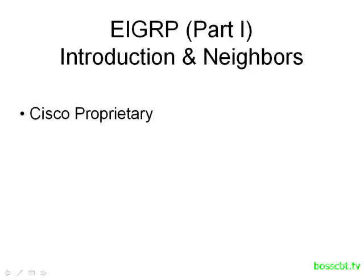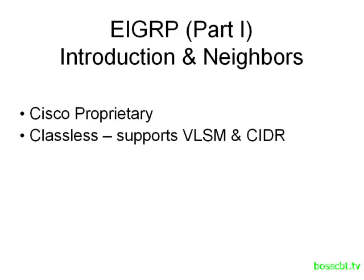EIGRP is a Cisco proprietary protocol, so it's not exactly as popular or as widespread as OSPF, which is an open standard, so we can only run this on Cisco hardware. EIGRP is classless, so we get all of the great benefits because it supports variable length subnet masking and CIDR.